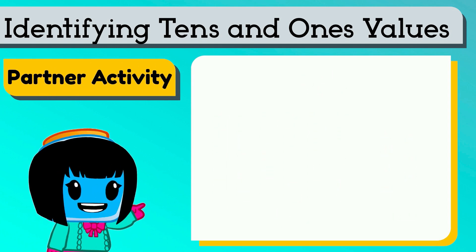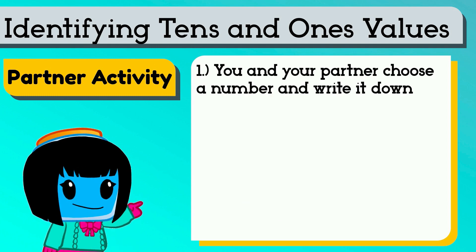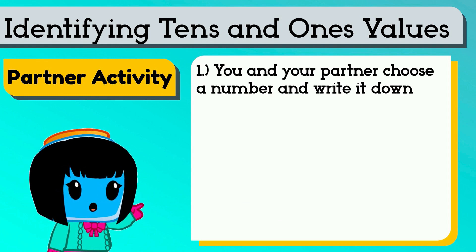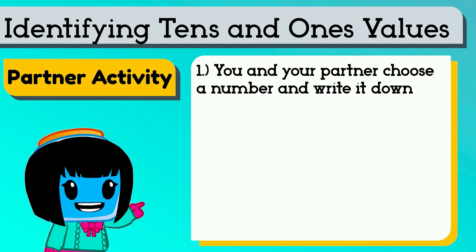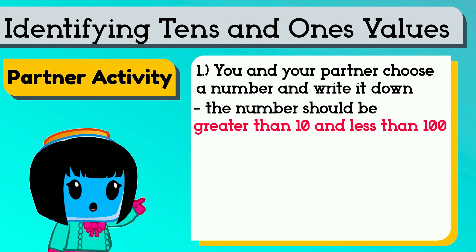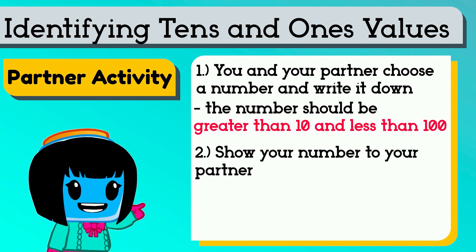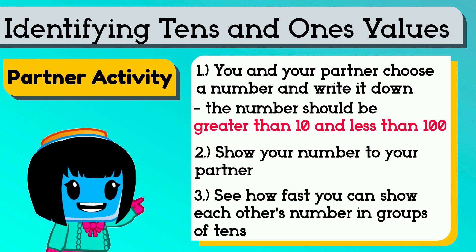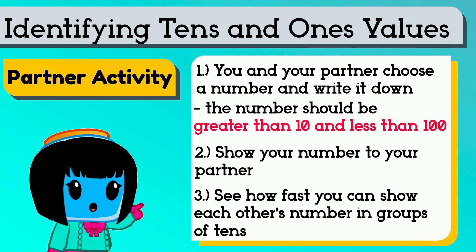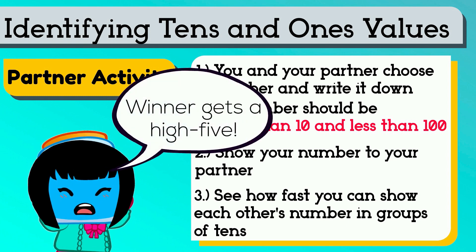Model place value by showing six groups of ten and then adding seven more. You can do this with a partner. With your partner, you can each write a different number on a piece of paper or a whiteboard. The number should be greater than ten and less than one hundred. Keep your number a secret. Then take turns showing each other the number you wrote down. See how fast each of you can show each other's numbers using groups of ten. Winner gets a high five!